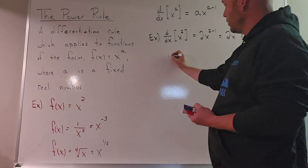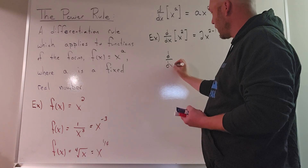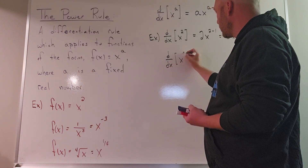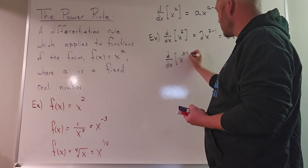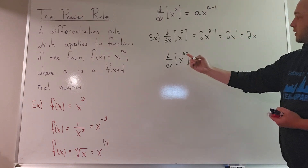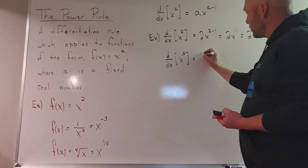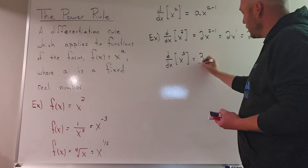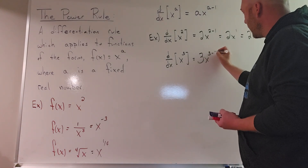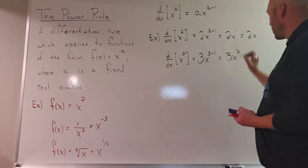For a similar polynomial term, such as x to the third: the derivative of x to the third. In this case the 3 is your a, so this would be 3x to the 3 minus 1, which is 3x squared.